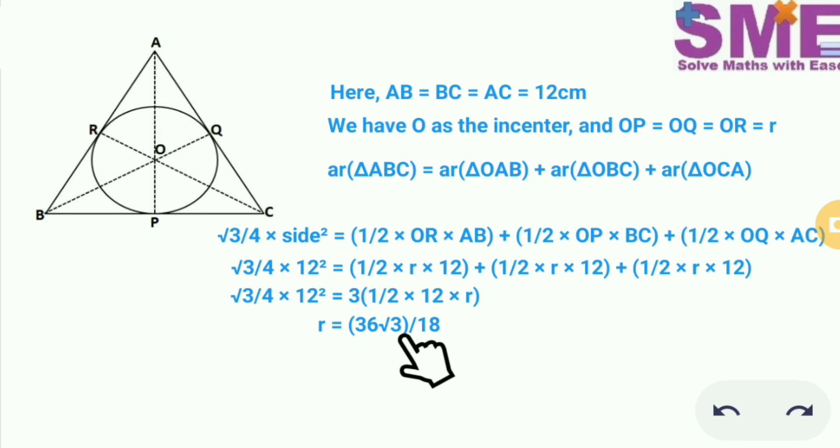So r is equal to 36 root 3 divided by 18. We get the value of the radius of the circle as 2 root 3 centimeter. So we have found the radius of the circle without using trigonometry.